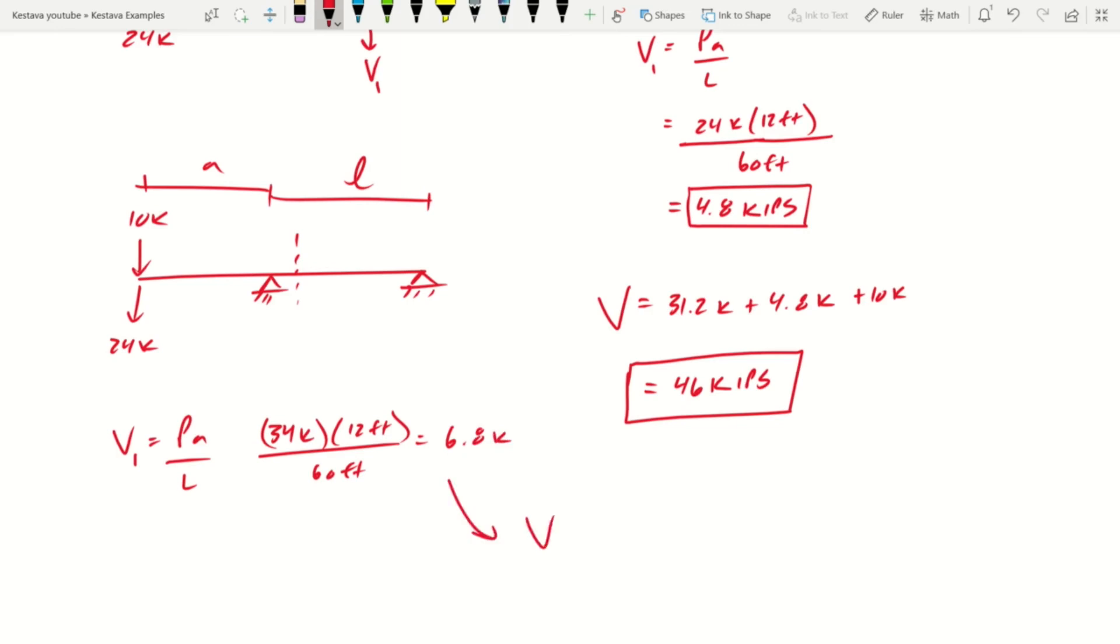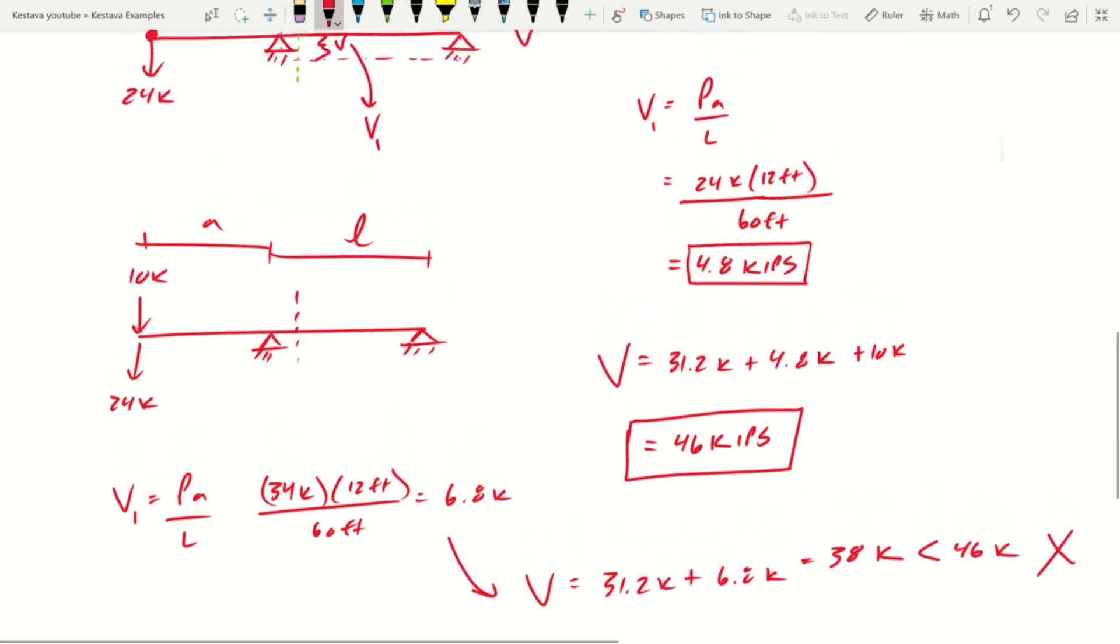So now your V would be 31.2 plus 6.8. And then now you can't include that 10 kip because it's being applied in this scenario at the end of the cantilever. So that just equals 38 kips, which is less than 46 kips. So we know that that is not the case. So let's look back up at the top.